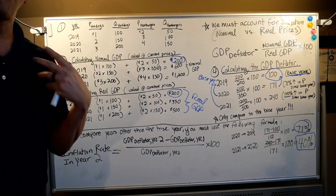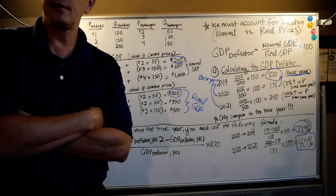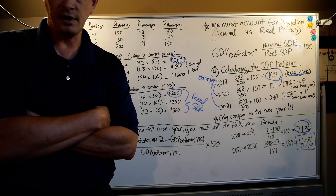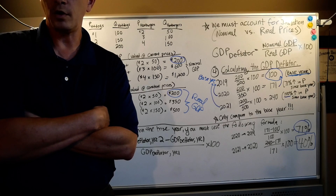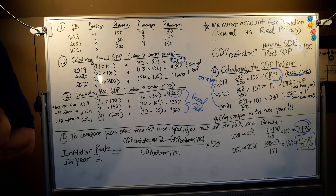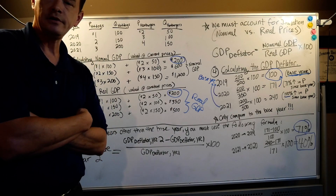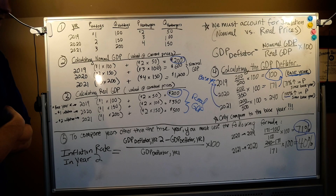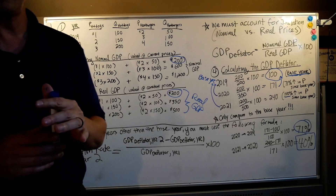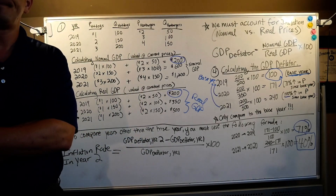This is a lot of information, but it's manageable. I just covered about 10 pages in roughly 17 minutes. That wraps up my lectures on chapter 10. Remember: you can only compare back to the base year using the GDP deflator alone, but if you need to compare other years, use the inflation rate in year two formula. Thanks for tuning in.